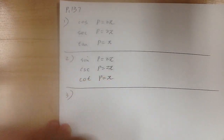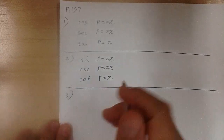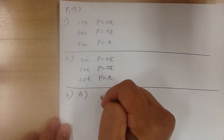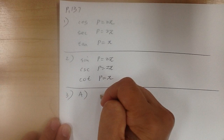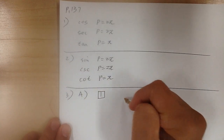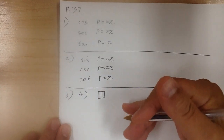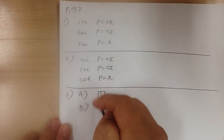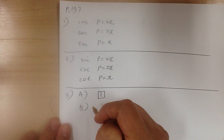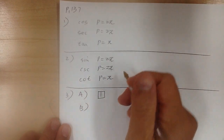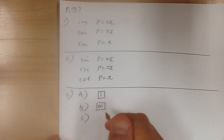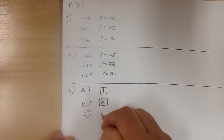Number 3 asks how far does a graph of each trig function deviate from the x-axis. For A, sine goes up and down by 1, so it deviates from the x-axis by 1. For B, cotangent goes to infinity. And for C, secant goes to infinity.